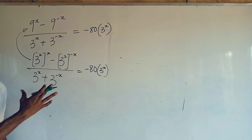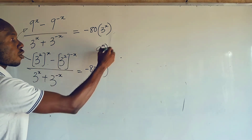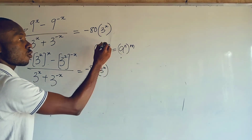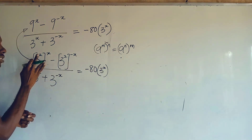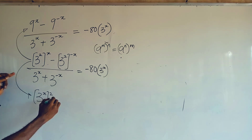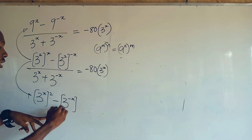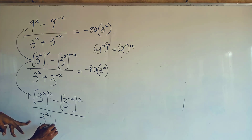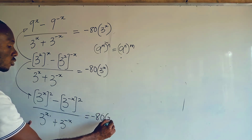In indices, I can swap these powers. So if I have a to the power of m, all to the power of n, I can write this as a to the power of m to the power of n, because multiplication is commutative — you can interchange them. So I have 3 to the power of x, all squared, then minus 3 to the power of minus x, all to the power of 2. Then all upon 3 to the power of x plus 3 to the power of minus x, equal to minus 80 times 3 to the power of x.